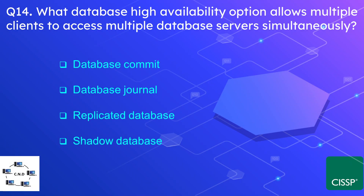Question number 14: What database high-availability option allows multiple clients to access multiple database servers simultaneously? The options are database commit, database journal, replicated database, or shadow database. The correct option is replicated database.